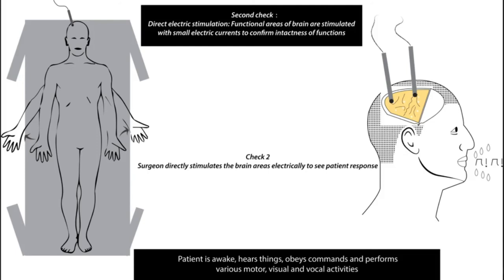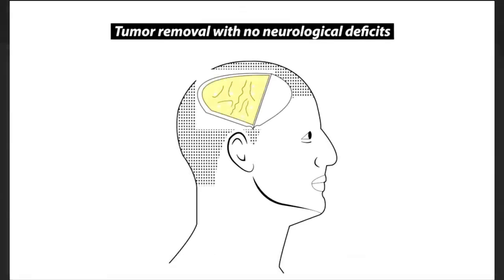At the slightest abnormality in either the first or second check, the surgeon becomes more careful and alters the surgical strategy to achieve the goal of safe maximal excision. Finally, the maximum amount of tumor is removed with minimal neurological deficits. This is called safe maximal excision, which is the ideal goal of surgery for the maximum number of brain tumors.